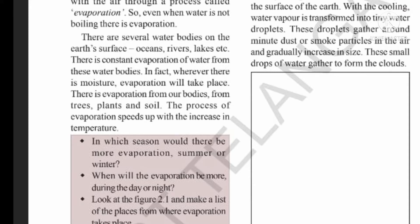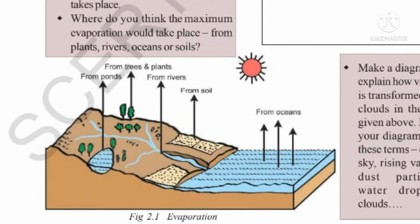There is constant evaporation of water from these water bodies. In fact, whenever there is moisture, evaporation will take place. There is evaporation from our bodies, from trees, plants and soils. The process of evaporation speeds up with the increase in temperature. From ponds, from rivers, from oceans, and the process of evaporation speeds up with the increase in temperature.